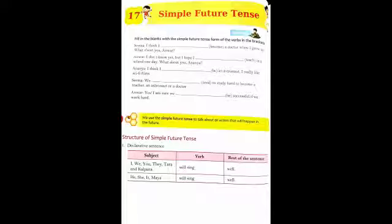In a declaratory sentence, for subjects I, we, you, they, Tara and Kalpana, the structure is: subject plus the helping verb 'will' plus the main verb plus the rest of the sentence. For subjects he, she, it, or Maya, the structure is also: subject plus helping verb 'will' plus the main verb plus the rest of the sentence.